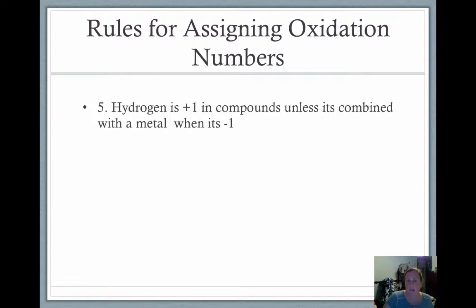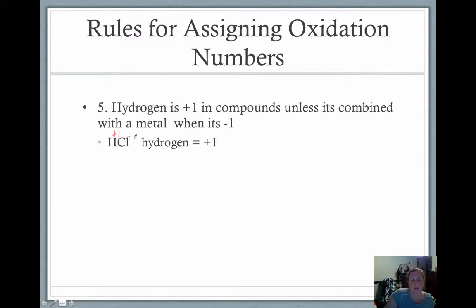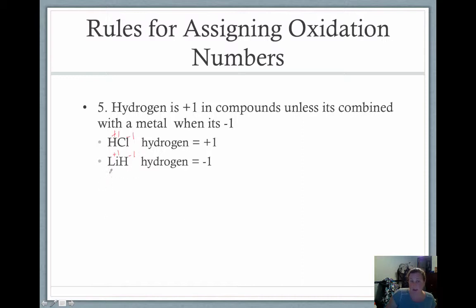Hydrogen is plus one in compounds unless it's combined with a metal, in which case it becomes minus one. In HCl, hydrogen is plus one since chlorine is a non-metal, and chlorine is minus one — neutral. In lithium hydride, hydrogen has been combined with a metal: lithium is a group one metal at plus one, which makes hydrogen minus one here. The rule is you've got to end up with a zero overall charge unless you have a polyatomic ion.